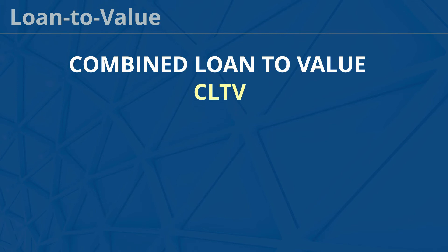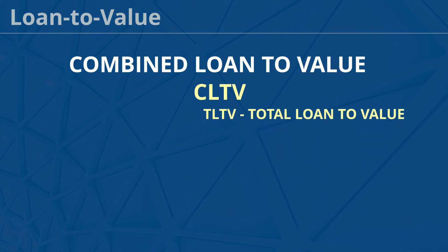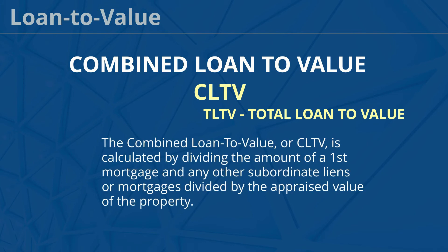There's another type of loan-to-value ratio known as combined loan-to-value, or CLTV. Occasionally you'll hear it called TLTV, or total loan-to-value. The combined loan-to-value or CLTV is calculated by dividing the amount of a first mortgage and any other subordinate liens or mortgages by the appraised value of the property.